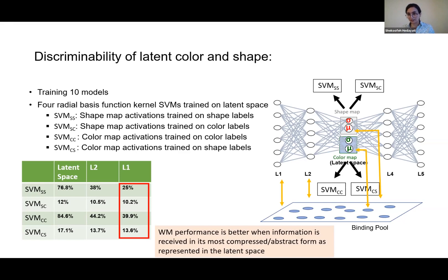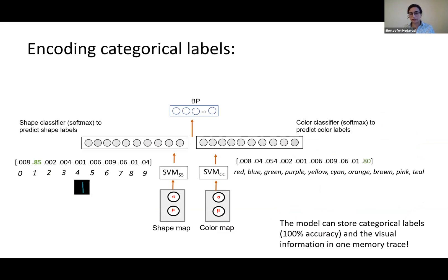We also tested the model with encoding categorical labels. For a given image of a blue or teal one, we extracted the label and using a softmax function and one-hot coding, we encoded both color and shape labels into the binding pool. We realized that the model can store categorical labels with 100% accuracy along with the visual information in just one memory trace.